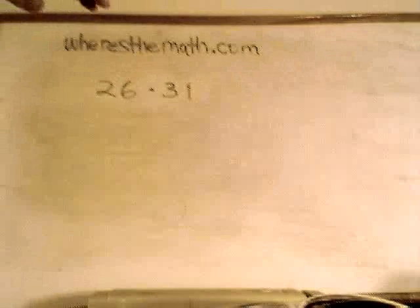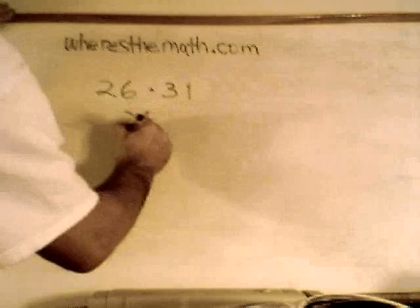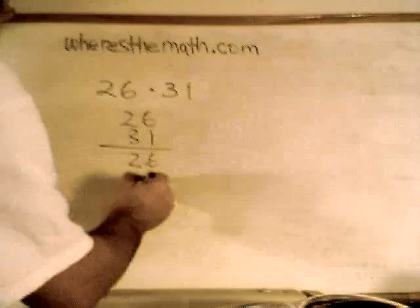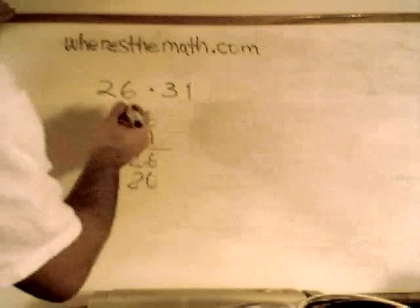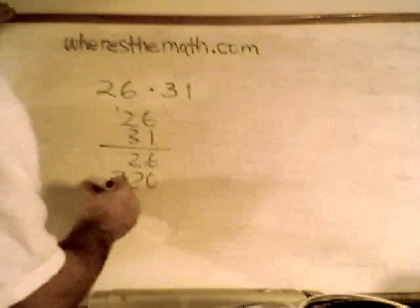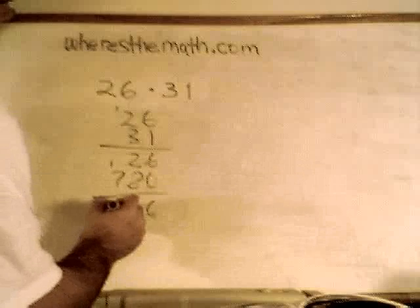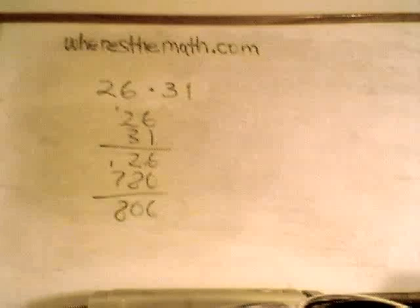Finally, we're going to compare it to the old standard method. 26 times 31, 6 times 1 is 6, 1 times 2 is 2, 0, 3 times 6 is 18, 6, 3 times 2 is 6 plus 1 is 7, 6, 10, carry the 1, 806. 17.52 seconds.